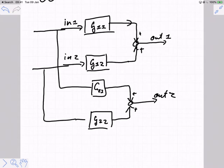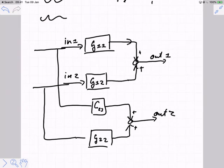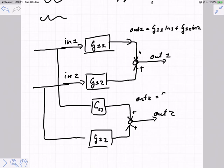Now, the math that corresponds to this is very simple. It just says that out1 is equal to g11 times in1 plus g12 times in2. And out2 is equal to g21 times in1 plus g22 times in2.